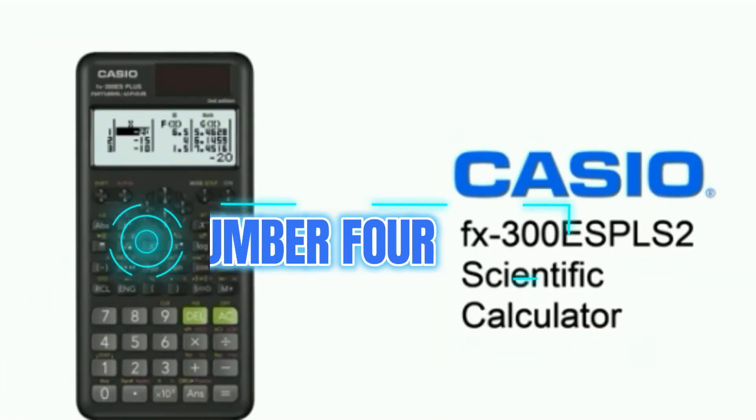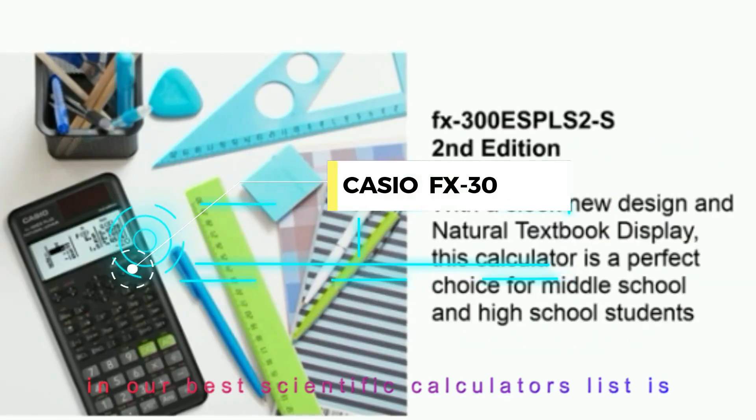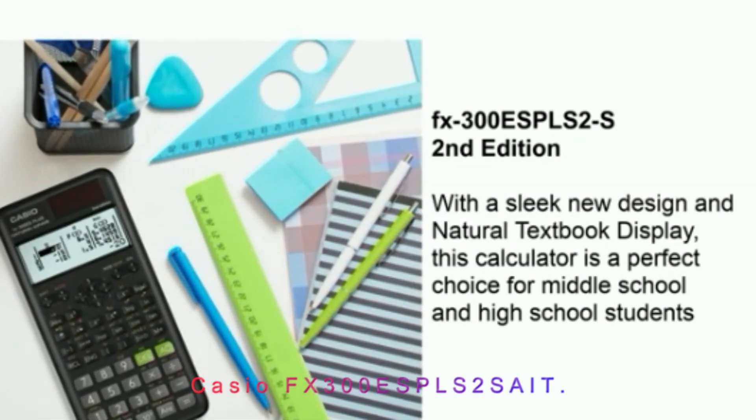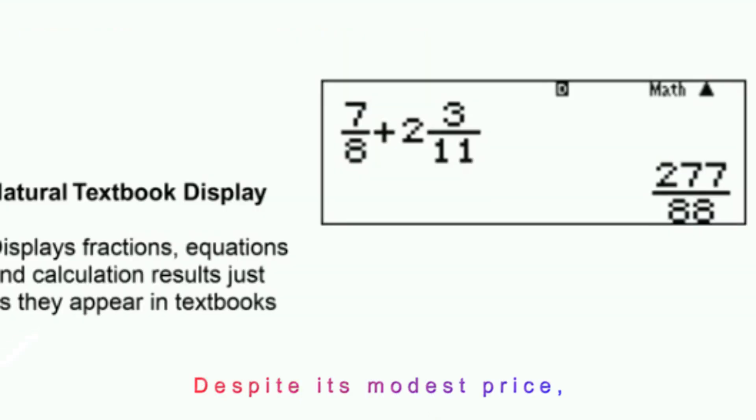Number 4 in our Best Scientific Calculators list is Casio FX300ESPLS-2SAIT. Despite its modest price, the FX300ESPLS-2SAIT is feature-packed.